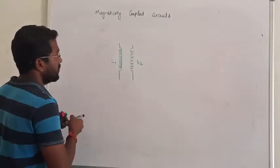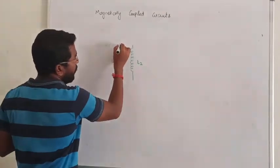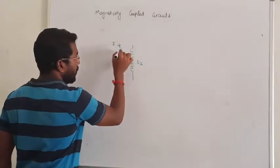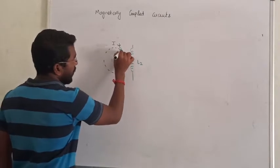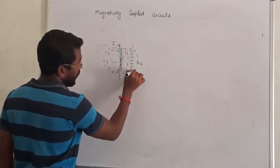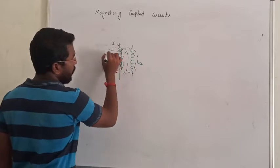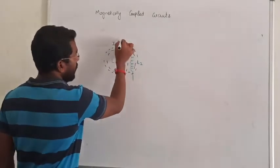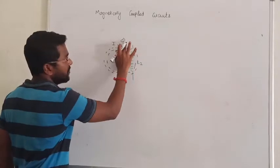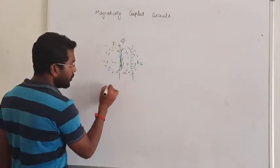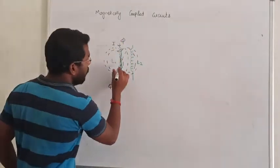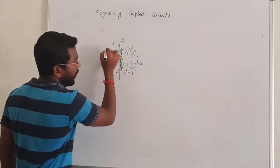Through coil 1, I am going to pass some current. The total flux produced by the primary coil is φ1. In the total flux φ1, some flux will be only linked with the primary coil itself — that is the leakage flux.